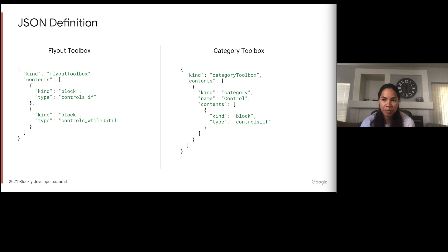As of September 2020, you can also define a toolbox using JSON. For both the flyout and category toolbox, you have a JSON object with a contents array. In the case of a flyout toolbox, the contents array is filled with blocks, buttons, and labels. In the case of a category toolbox, the contents array is filled with categories, and inside each category is another contents array filled with blocks, buttons, and labels.